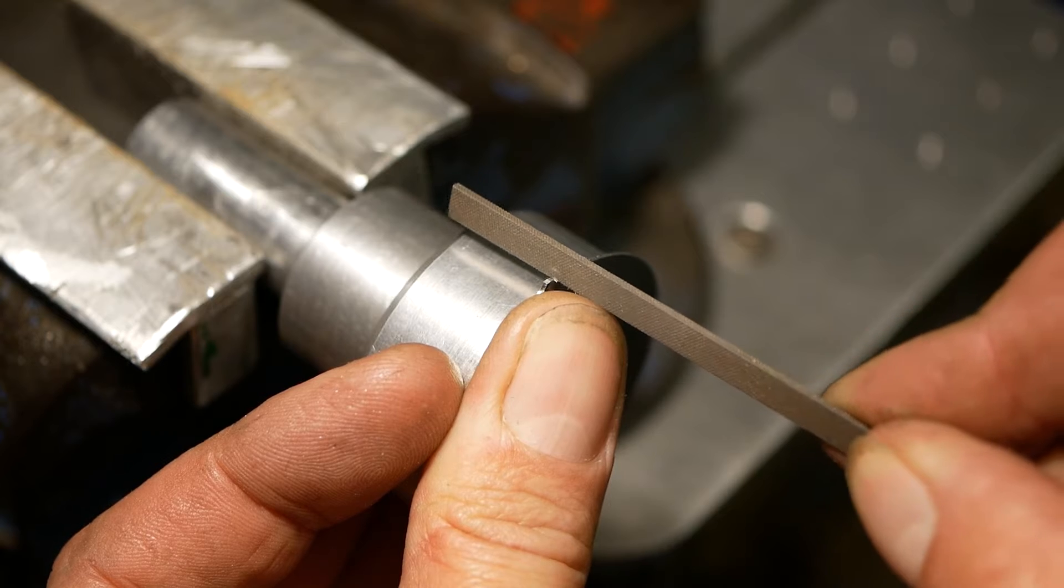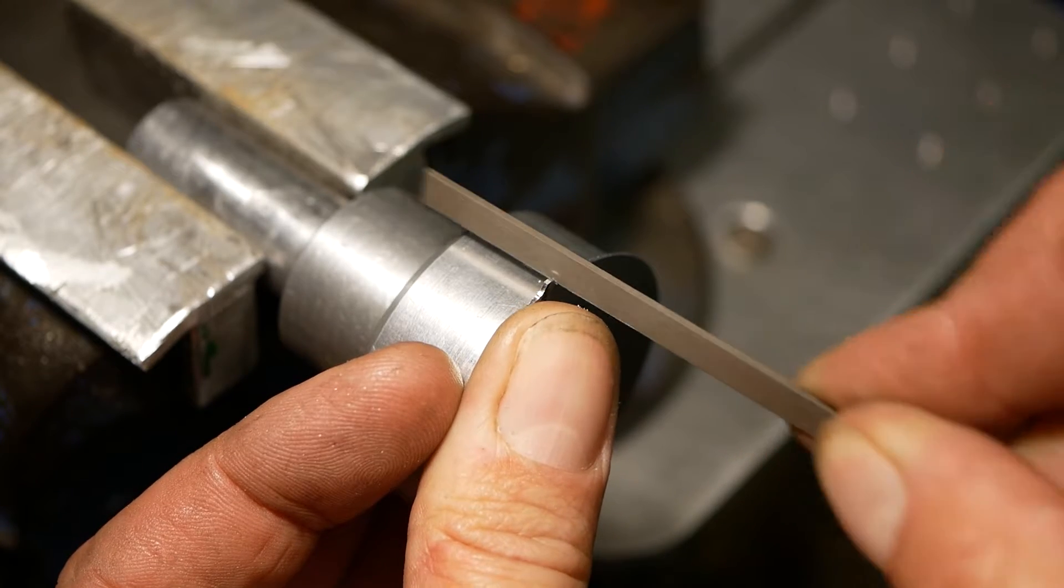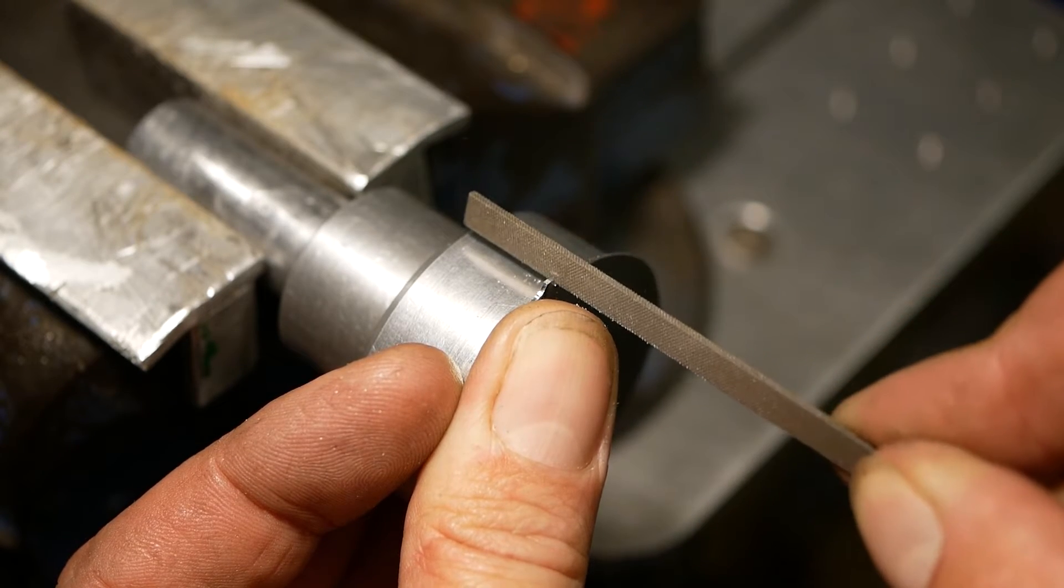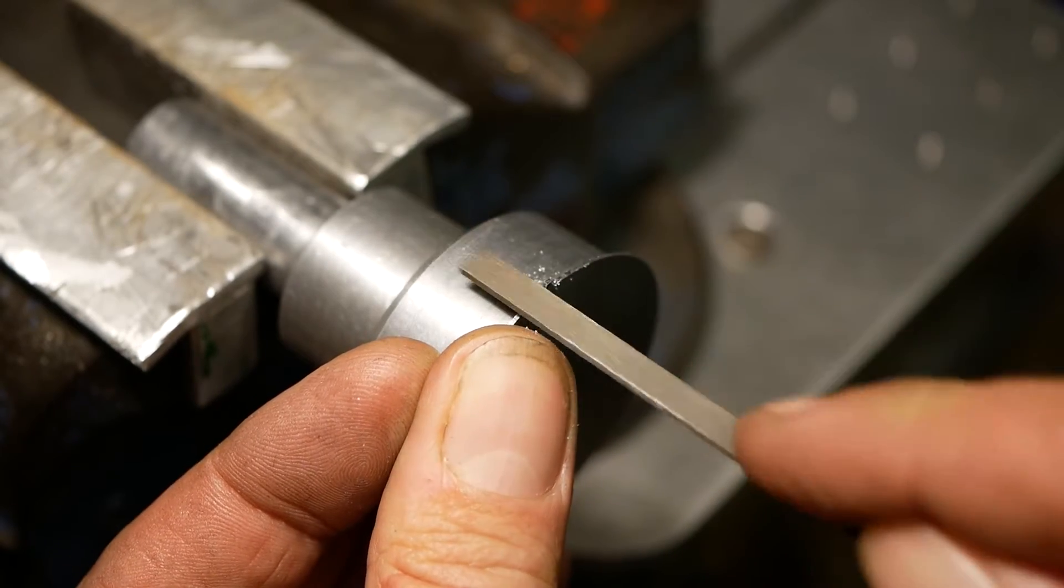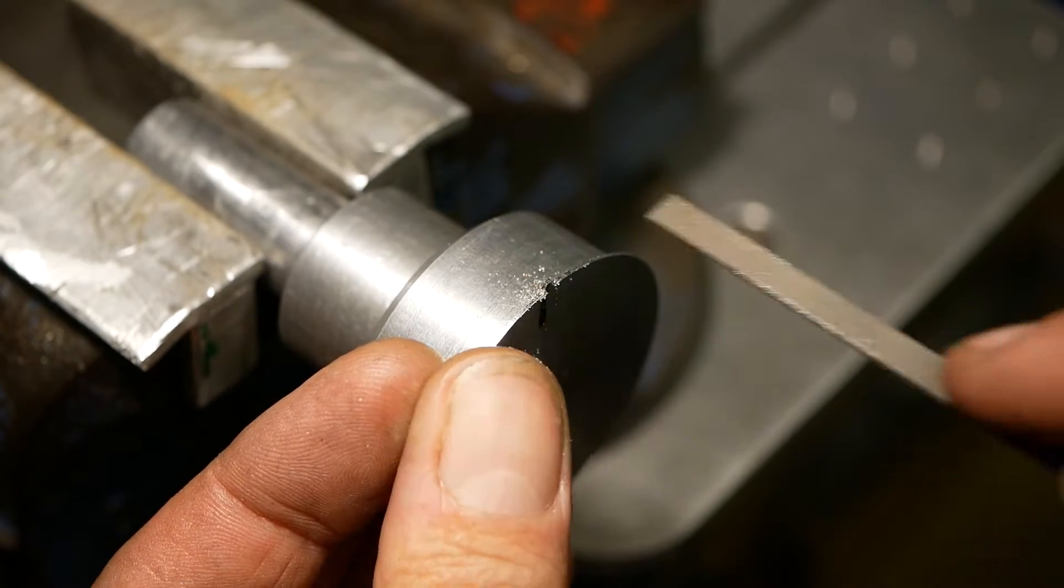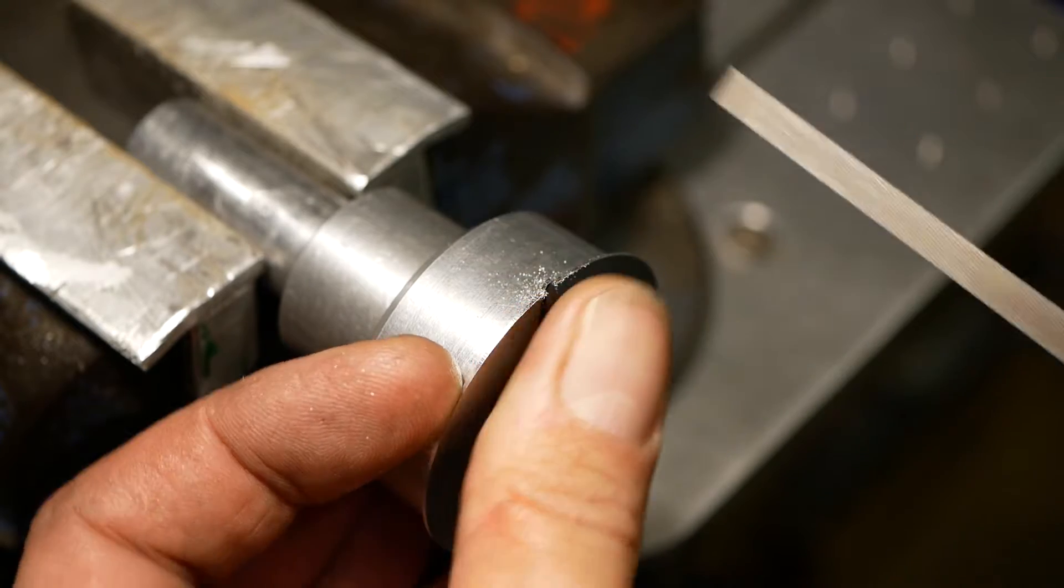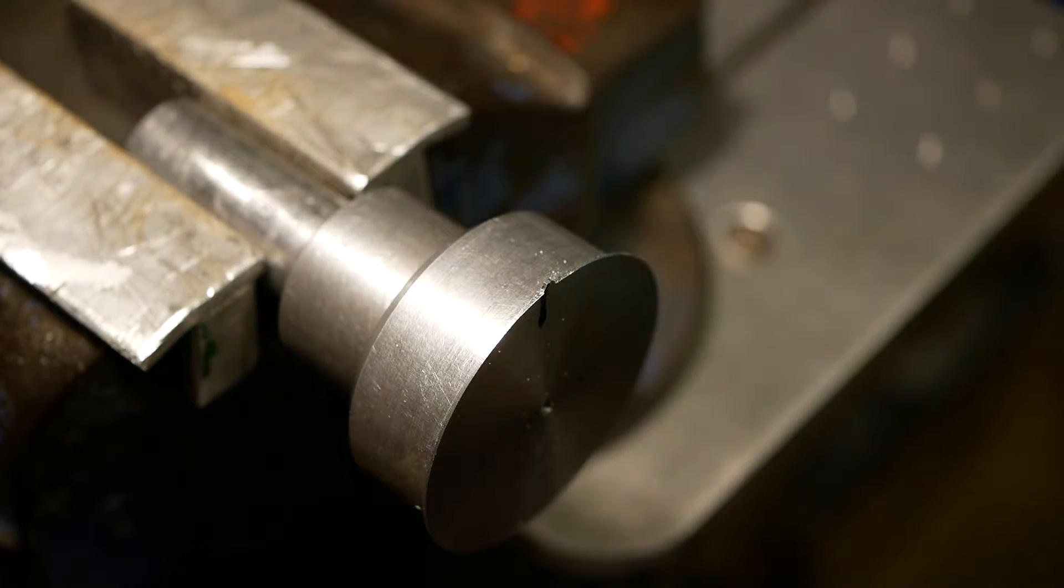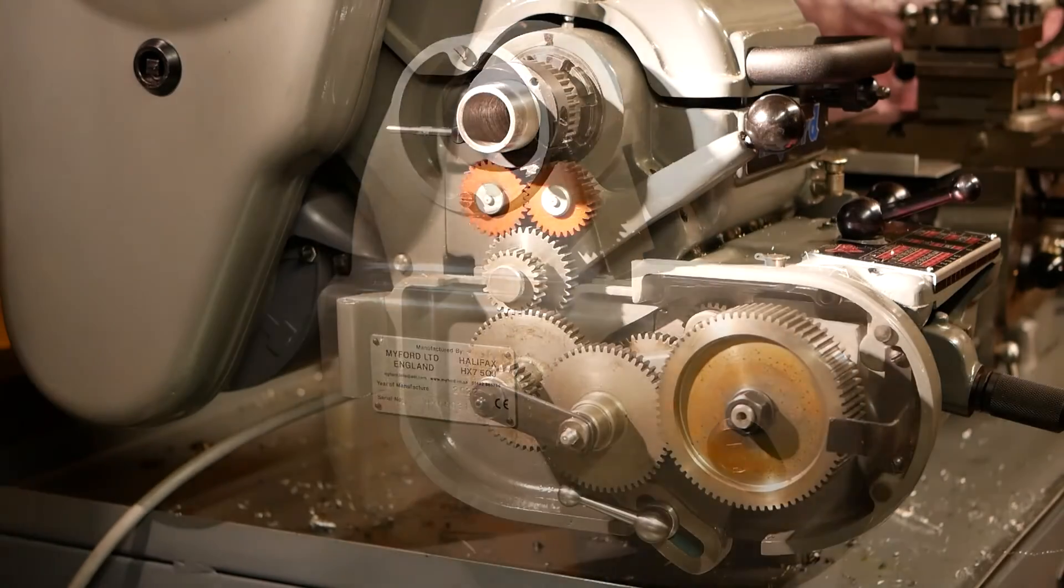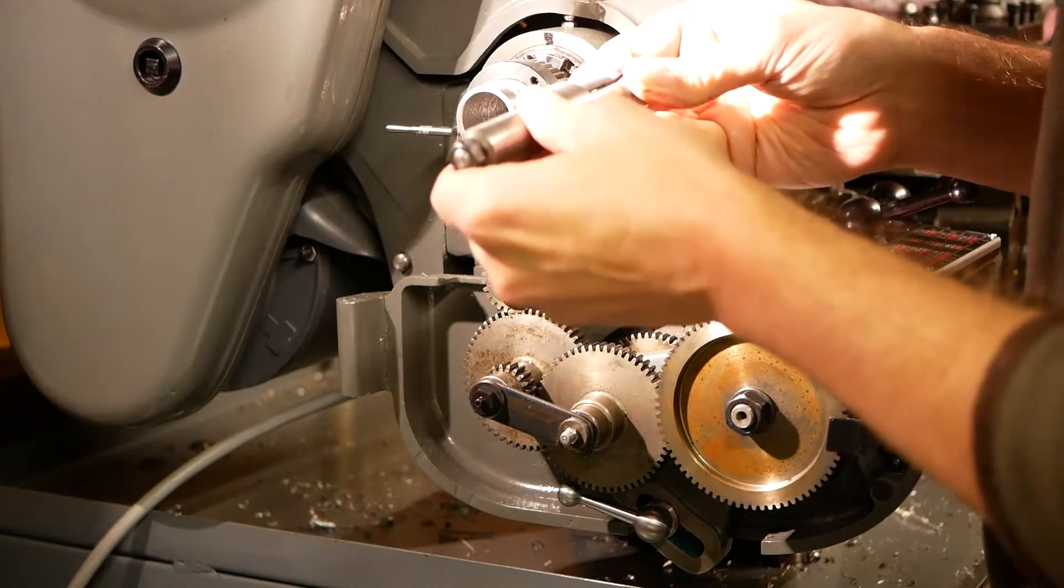The tab is cleaned up using needle files. A dividing head is mounted onto the lathe to form the divisions.